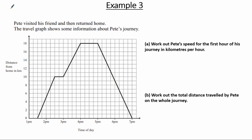We can now move on to example three, which is the final example in this tutorial. Pete visited his friend and then returned home. The travel graph shows some information about Pete's journey, where distance from home in kilometers is on the vertical axis and time of day is on the horizontal axis.